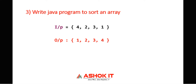Hi friends, this is Ashok, welcome to AshokIT. In this video we will learn how to sort an array using a Java program. We are taking one input array which has elements 4, 2, 3, 1 in zigzag order. We want to sort that array to get the output as 1, 2, 3, 4 — sorting in ascending order.